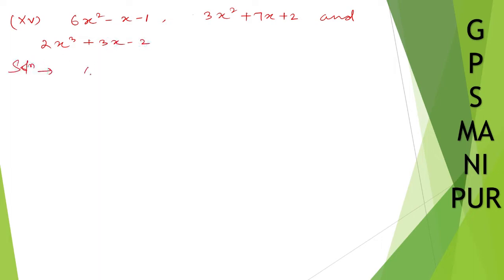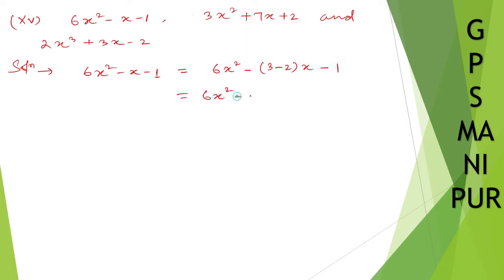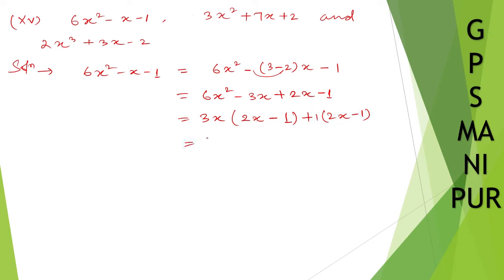Solution: for 6x squared minus x minus 1, we split the middle term. Since 6 times 1 is 6, and 3 minus 2 equals 1, we write it as 6x squared minus 3x plus 2x minus 1. Taking 3x common gives 3x(2x minus 1), and taking plus 1 common gives (2x minus 1)(3x plus 1).